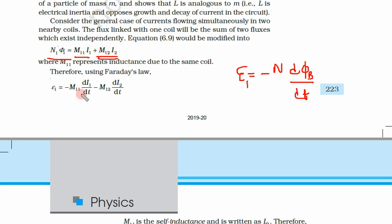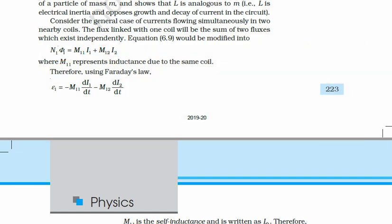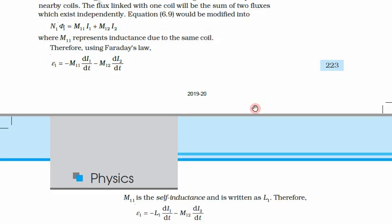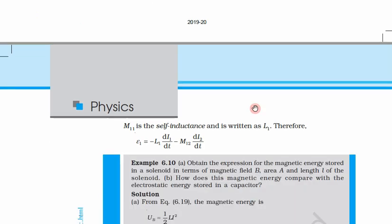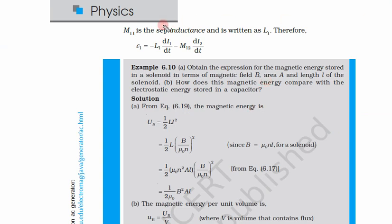Substituting the values: since M₁₁ is a constant it comes out of the differential, giving d·i₁/dt. Similarly, M₁₂ is a constant and comes out, giving d·i₂/dt. This yields the formula: ε₁ = −M₁₁·(di₁/dt) − M₁₂·(di₂/dt). This is the EMF induced in coil 1 due to both self-inductance and mutual inductance.